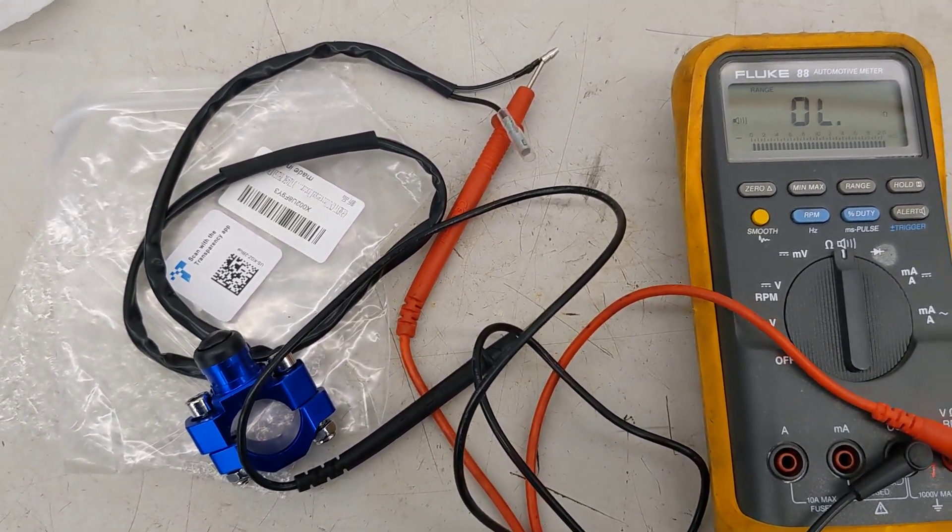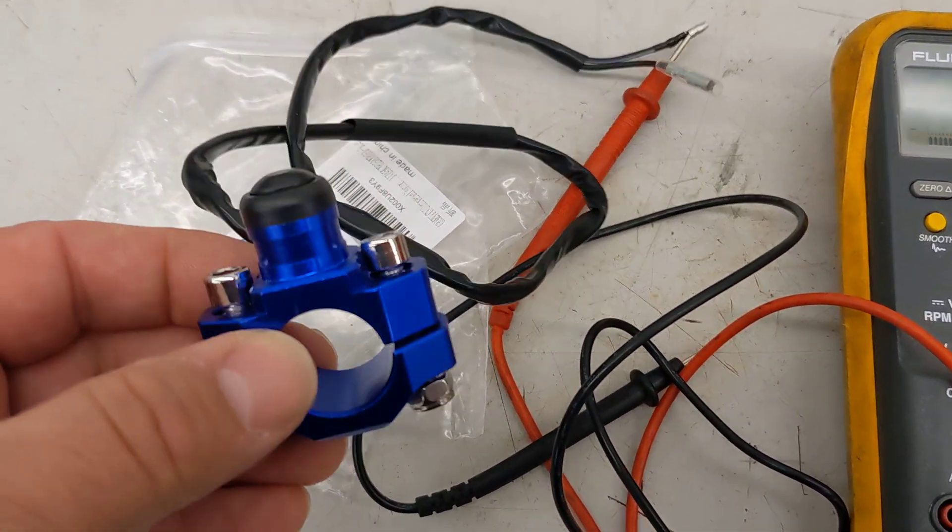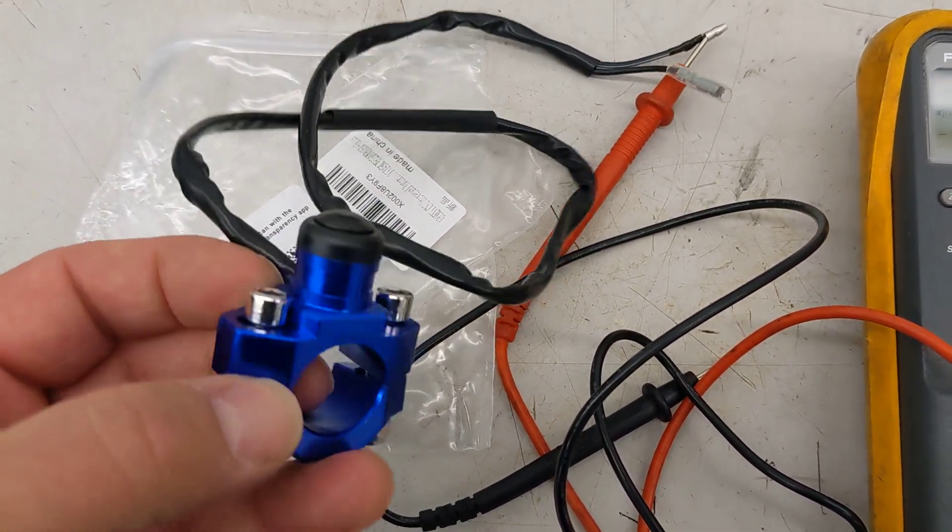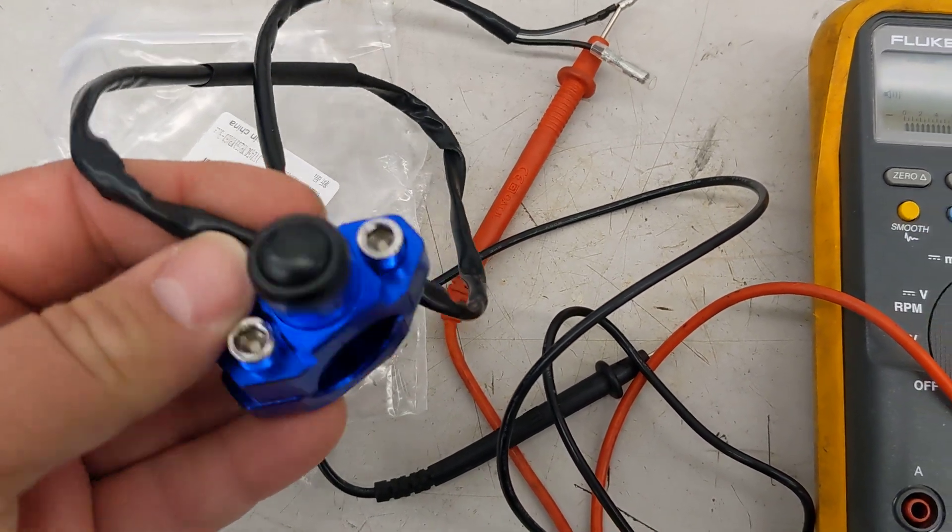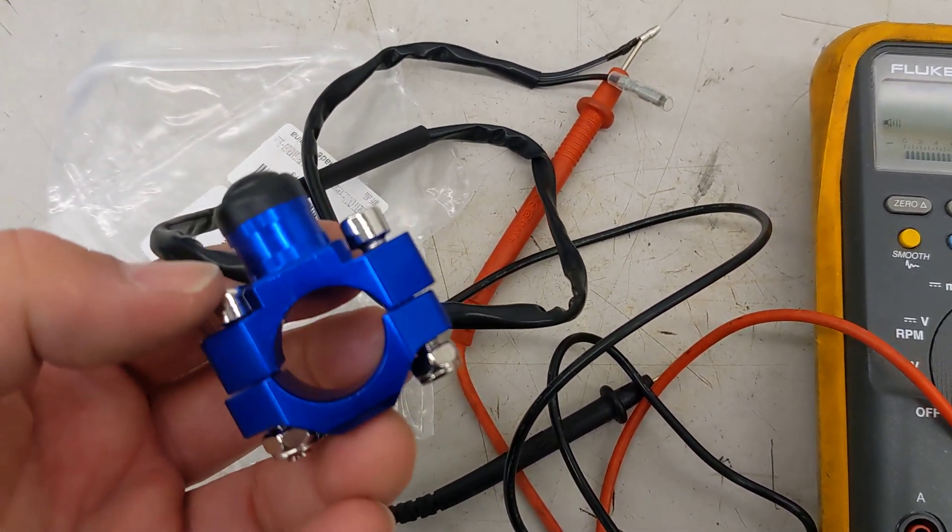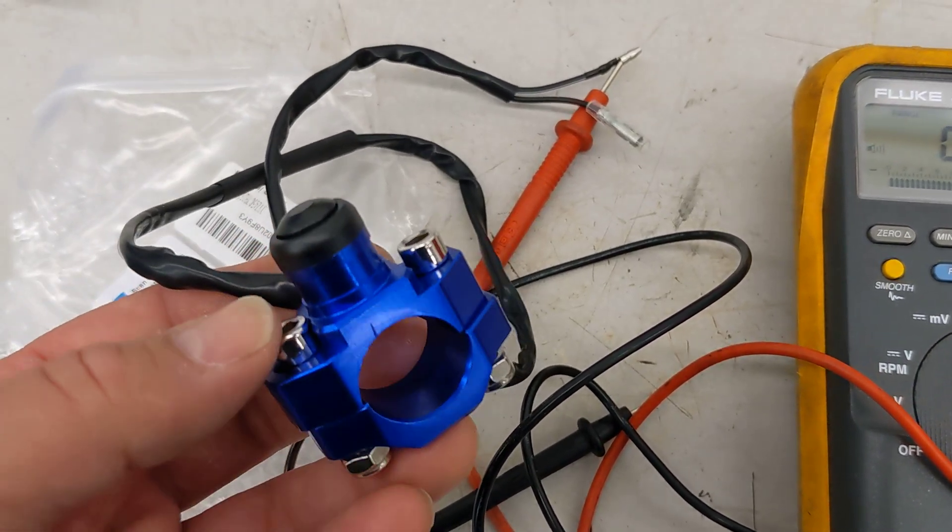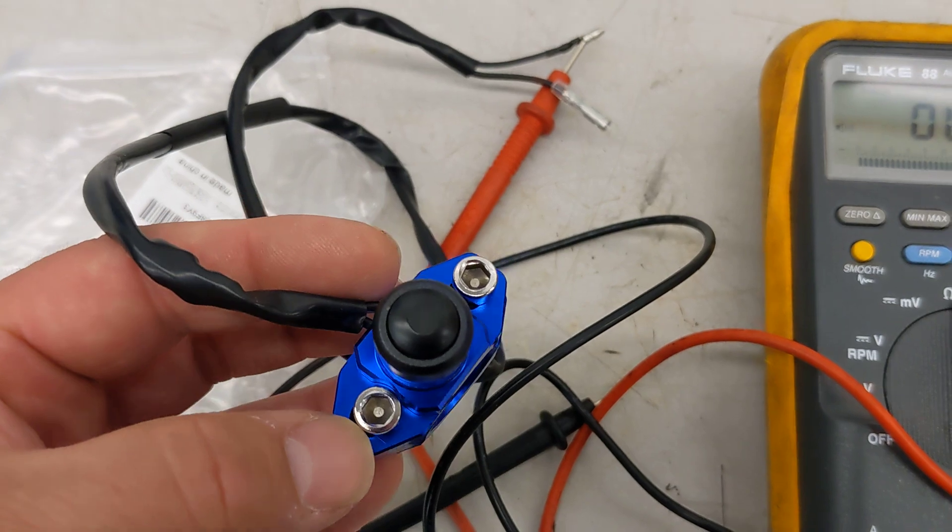Hi everybody. So this is a momentary contact switch that I picked up on Amazon for about $10. And my plan is to use this in place of the regular start switch on my 1999 Yamaha TW200 motorcycle.